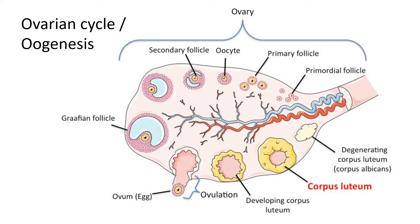Now let's look at the ovarian cycle, or oogenesis. Oogenesis happens during the ovarian cycle inside the ovary — this entire large round structure we're looking at is the ovary. The ovarian cycle happens every single month, roughly every 28 to 30 days. Starting at the top and ending at the bottom, the cycle begins with a follicle forming, with an egg cell in the middle. This egg cell — the ovum — will eventually mature and be released into the fallopian tube.